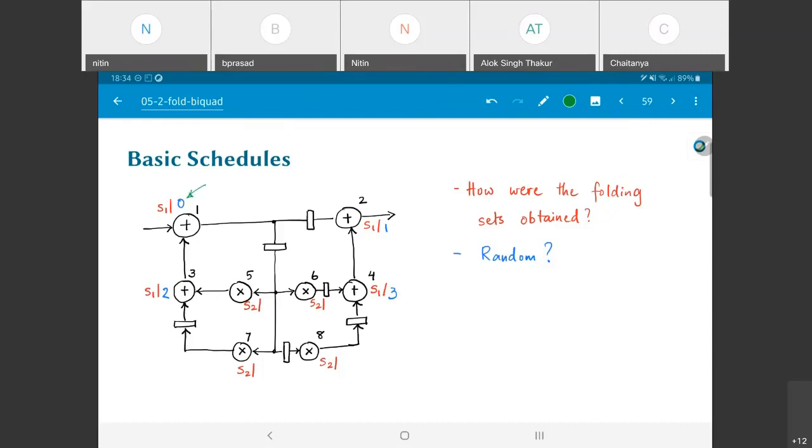As I have put down over here, I have basically just assigned operation number 1 to happen at time 0, operation 2 to happen at time 1, operation 3 to happen at time 2, and 4 to happen at 3. I have just chosen a sequence like that.